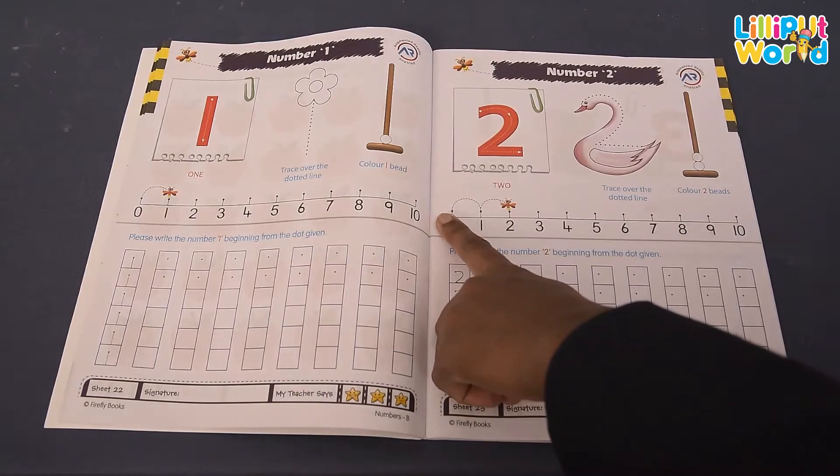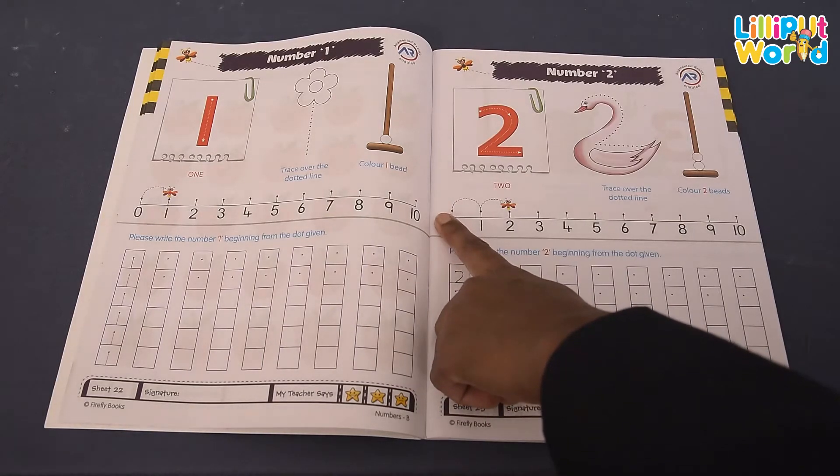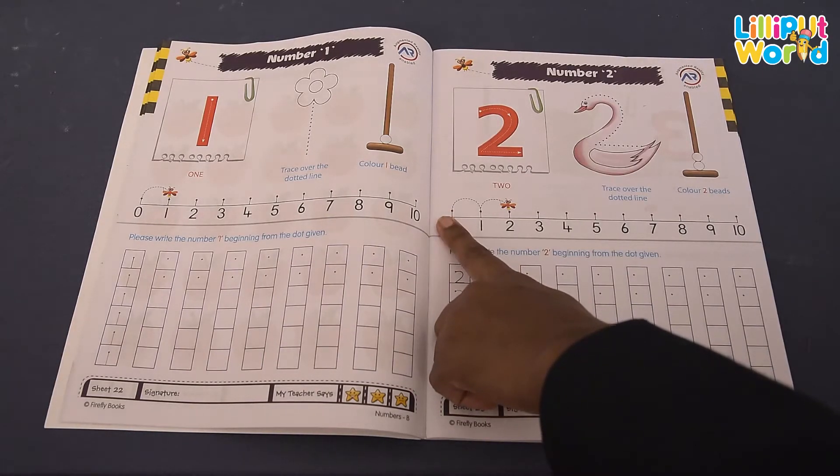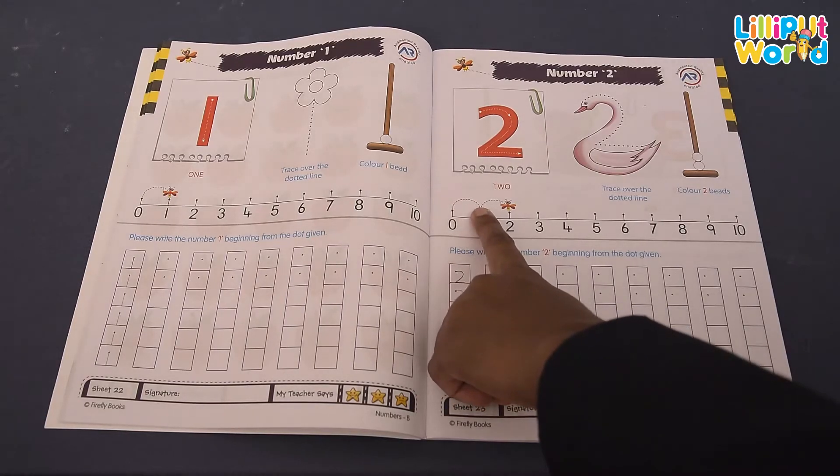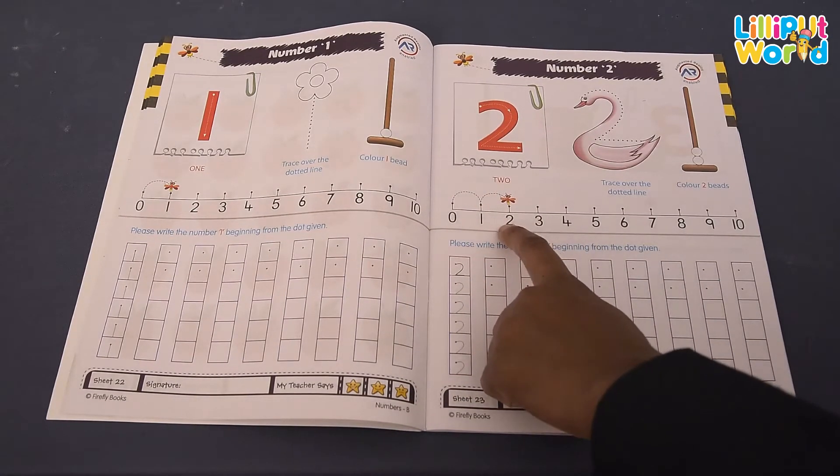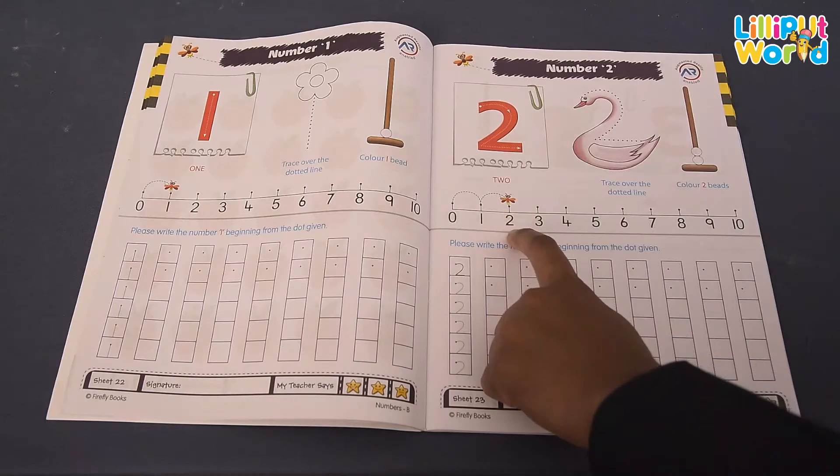Now go to the number line. Now how many times you have to jump? 2 times. 1 and 2. So here is number 2.